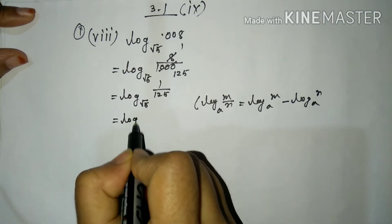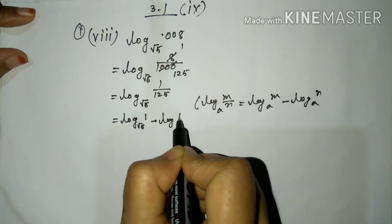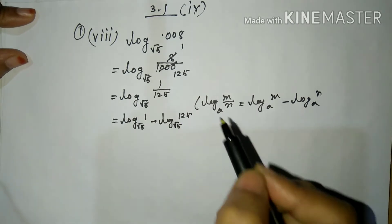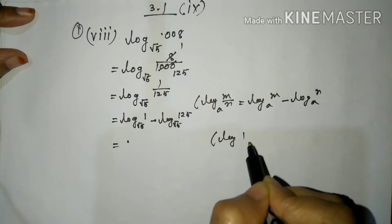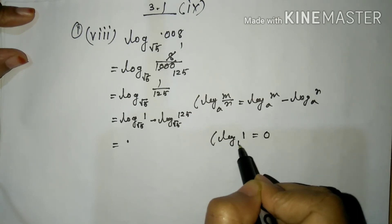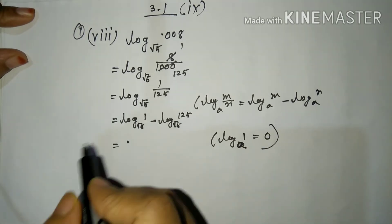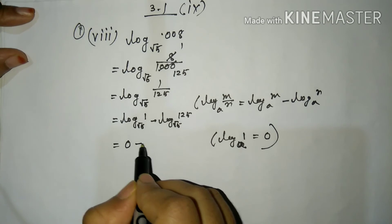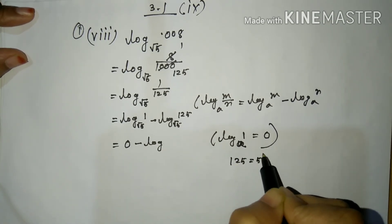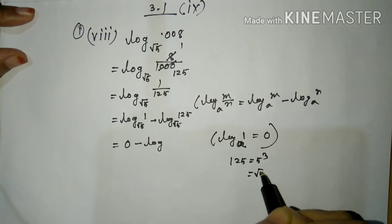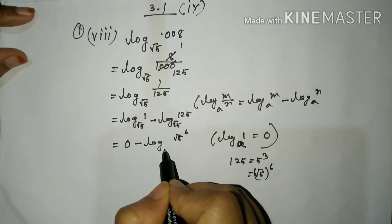Log .008 to the base root 5 equals log 1 to the base root 5 minus log 125 to the base root 5. Log 1 to any base equals 0. Now 125 equals 5 cubed, and the base is root 5, which equals 5 to the power one-half.